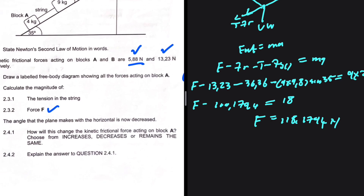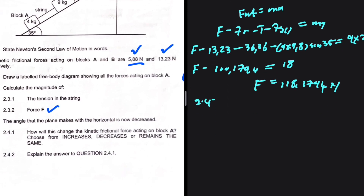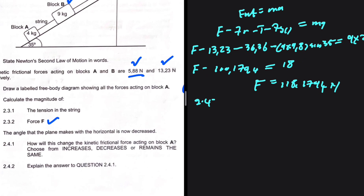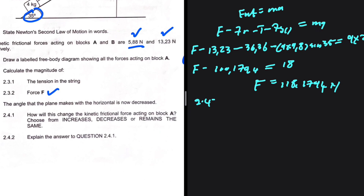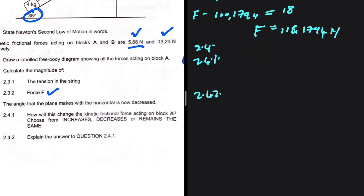Question 2.4: the angle that the incline makes with the horizontal is now decreased. How will this change the kinetic frictional force acting on block A? Choose from increase, decrease, or remain the same, and explain your answer. Let's figure out whether the kinetic frictional force will increase or decrease.